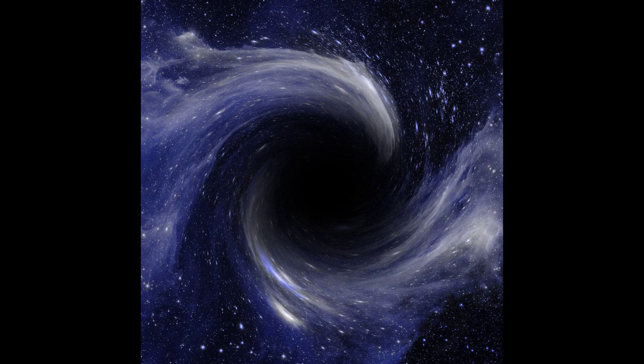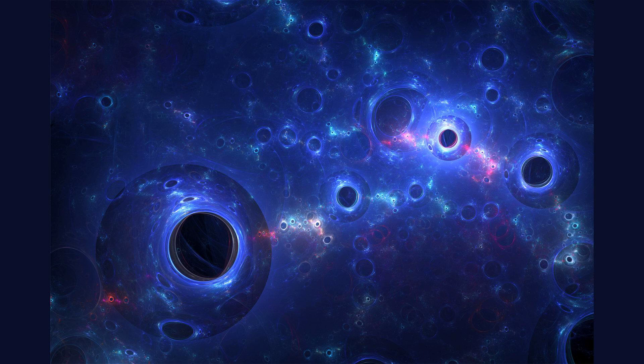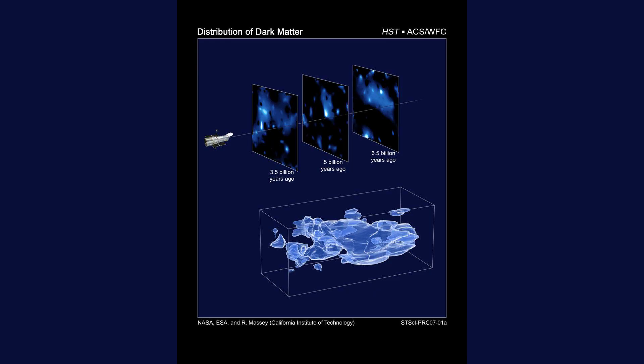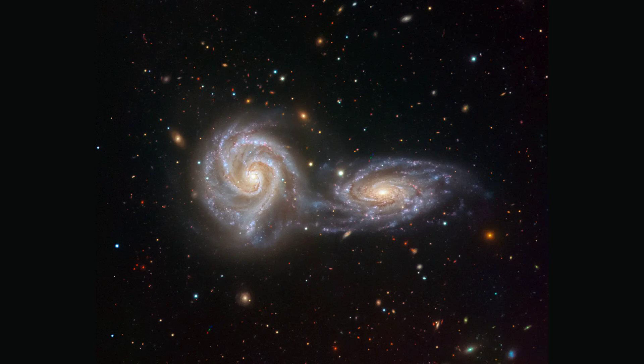But what keeps galaxies intact? The answer lies in the mysterious force known as dark matter. Although invisible and undetectable by conventional means, dark matter exerts a gravitational pull that holds galaxies together. In fact, it is estimated that dark matter makes up about 85% of the total matter in the universe, playing a vital role in shaping the structure and dynamics of galaxies.